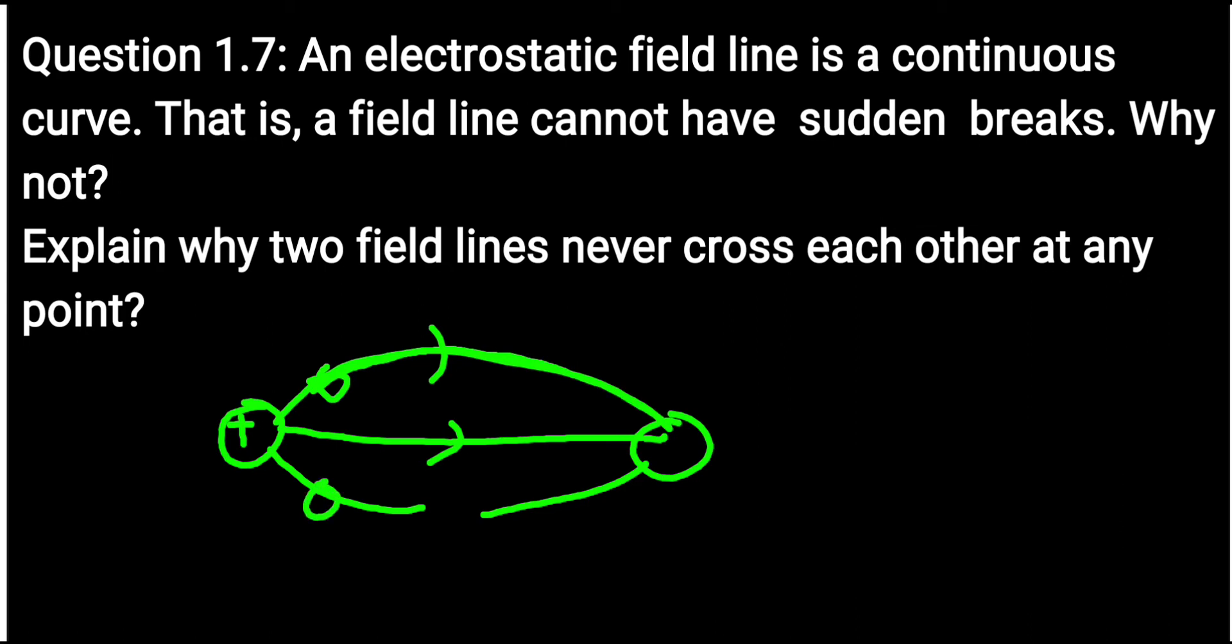If you place a charge here, it will follow this path. That's why we have these field lines. This is how these lines are traced. The thing is that if the charge is here, it cannot jump from one point to another point. The charge cannot jump. That's why we cannot have sudden breaks.